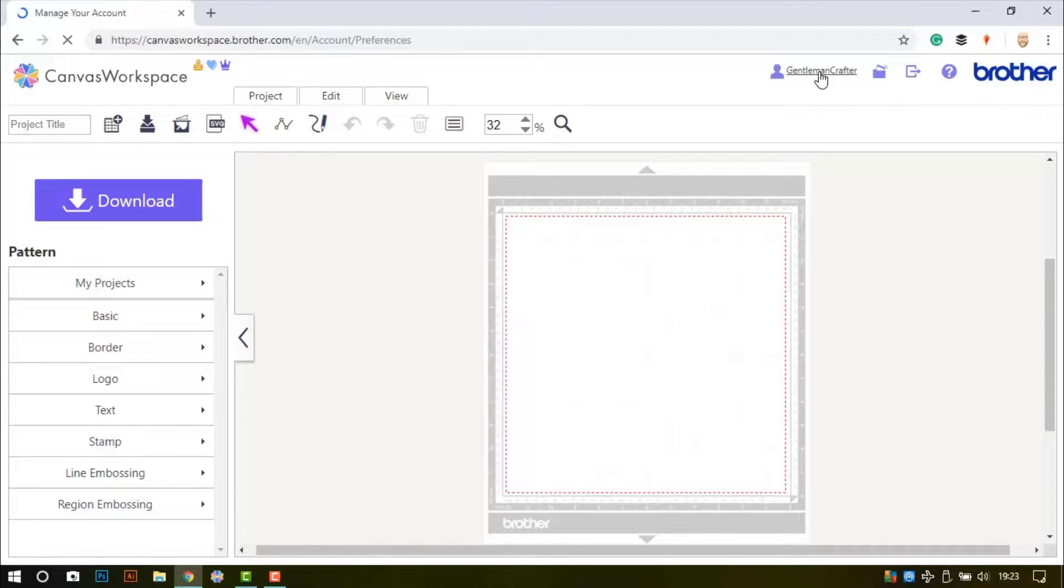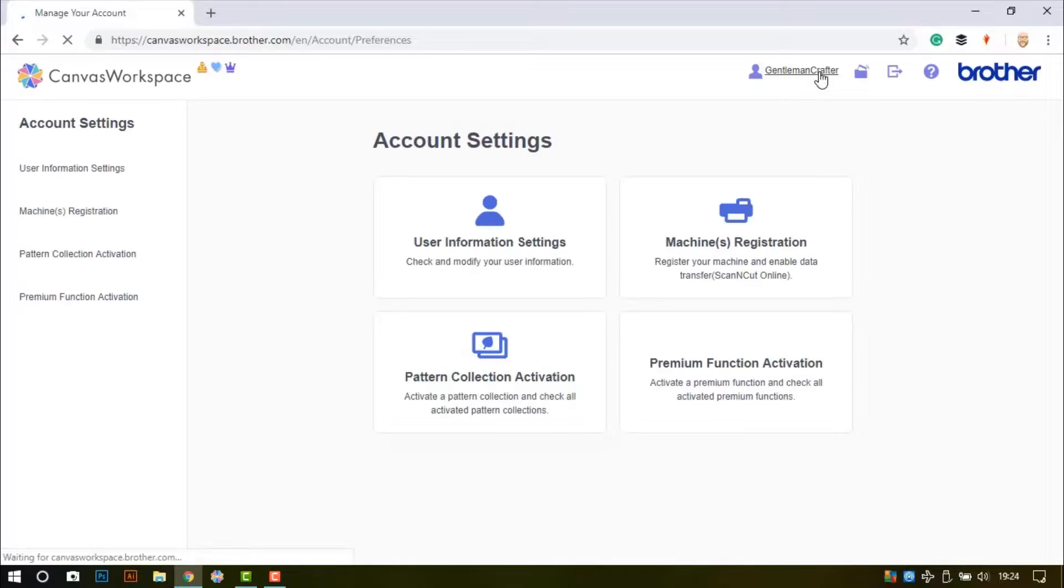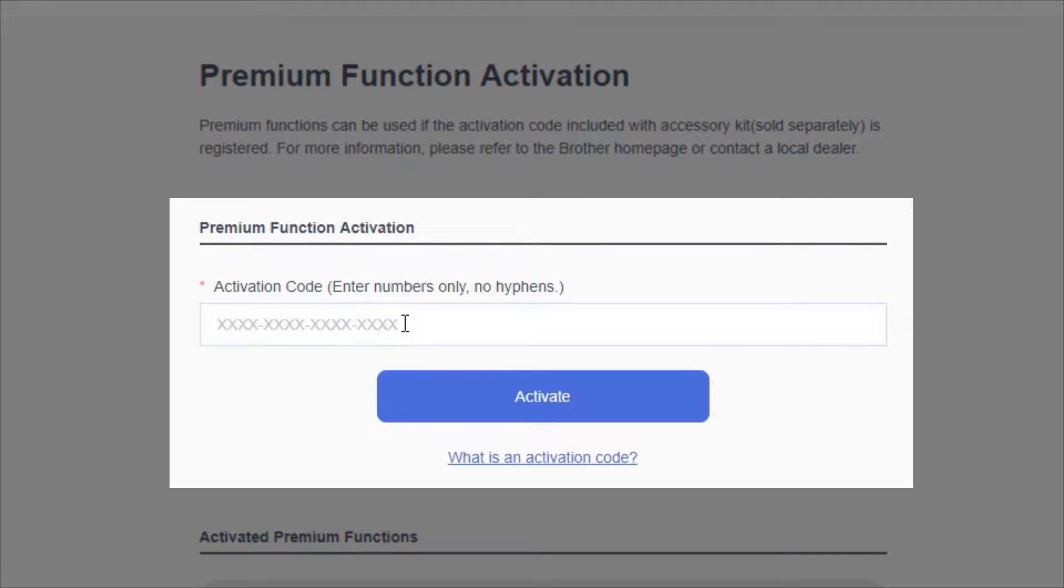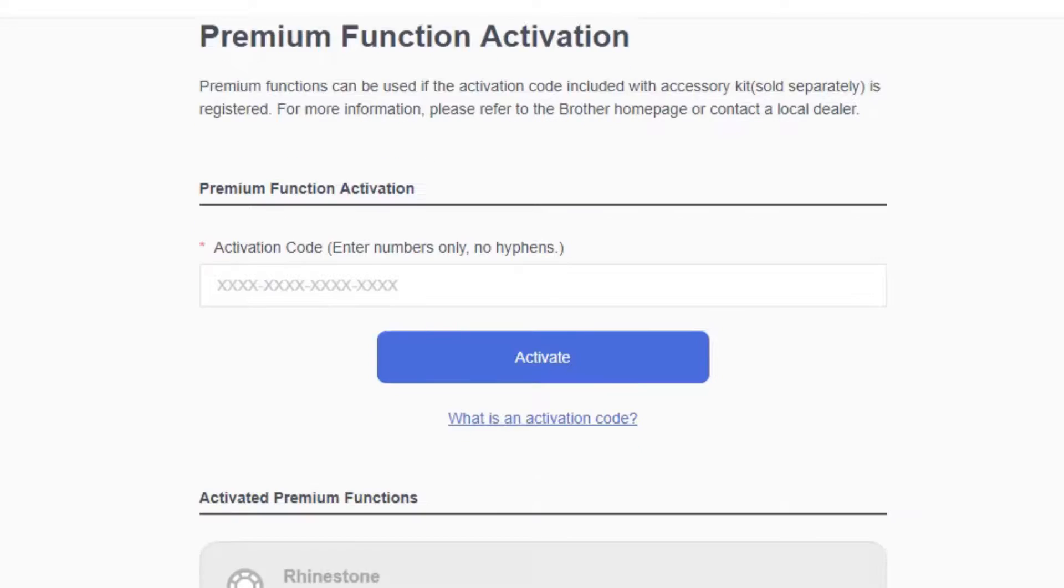When you arrive in your account there will be an option bottom right of the four available saying Premium Function Activation. Click on that and you will then be presented with an activation code box. That is where you will type your activation code.